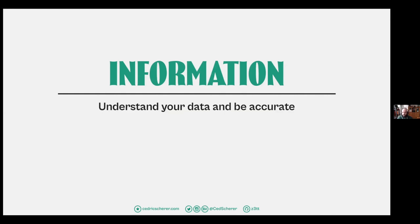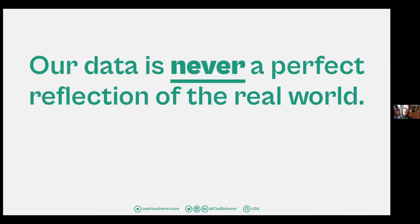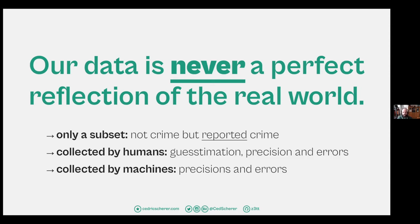Let's start with information: understand your data and be accurate. Two learnings from 'Avoiding Data Pitfalls' by Ben Jones: first, our data is never a perfect reflection of the real world. It's always a subset — for example, it's not crime, it's reported crime. It's measured, surveyed — but not crime per se. It's collected by humans, so we may have precision errors. Always check your data for problematic input and keep in mind it's only a subset of the real world.